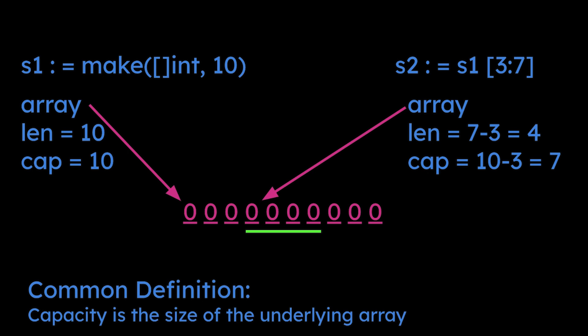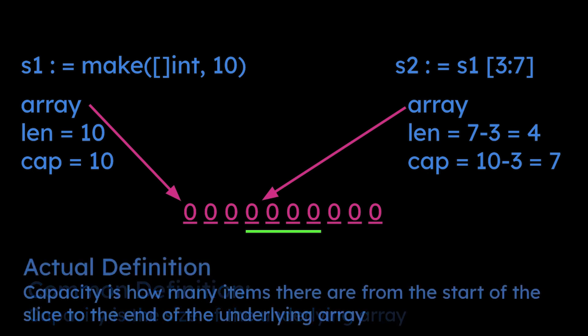It's only got seven spots to work with. So the actual definition of capacity is how many items there are from the start of the slice to the end of the underlying array. That's why the capacity here is actually seven.